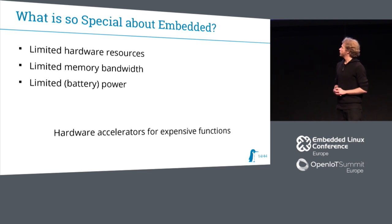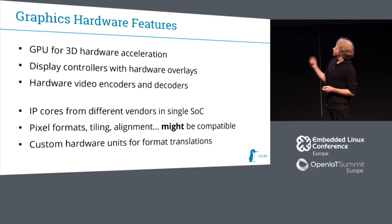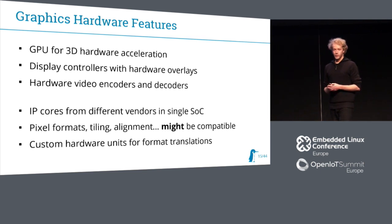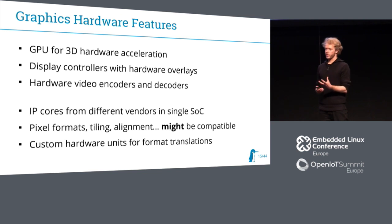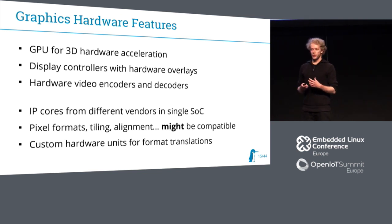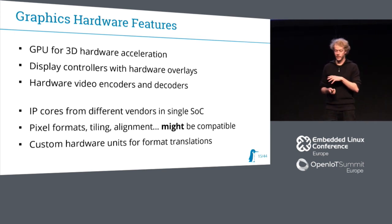Usually you have different hardware accelerators for your graphics: GPUs, video decoders, and display controllers. The GPU is for 3D hardware acceleration. Display controllers have especially different overlays — hardware overlays which can be used. So you don't have to composite in your compositor, but you just put your output to different overlays and it's composited in your display controller. And you have hardware video encoders and decoders to avoid using your CPU for that and wasting energy.